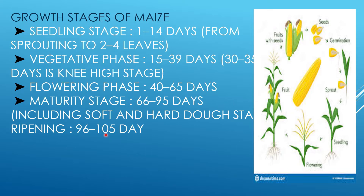The fifth and final stage is the ripening stage, from 96 to 105 days. After completion of 105 days, we have to harvest the crop.